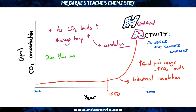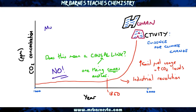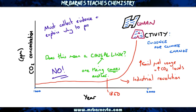What it doesn't mean is there's an actual causal link. A causal link is where one thing directly causes another. To prove there's a causal link — to prove that as the CO2 levels go up, so does the temperature — scientists must do a couple of things. They must first of all collect evidence and then they must use that evidence to explain why.